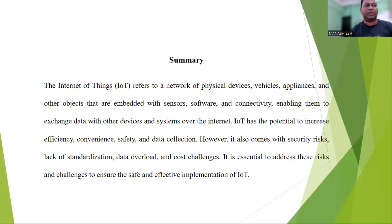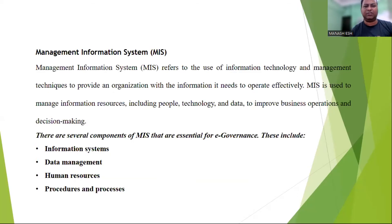In summary, IoT is a network of physical devices, vehicles, home appliances, and other objects that are embedded with sensors, software, and connectivity, enabling them to exchange data with other devices and systems over the internet. IoT has the potential to increase efficiency, improve convenience, enhance safety, and provide better data collection. However, it also comes with risks such as security breaches and data overload, as well as challenges such as lack of standardization and high cost. Successful implementation of IoT requires careful consideration of these risks and challenges, as well as deployment of appropriate security measures and standards.